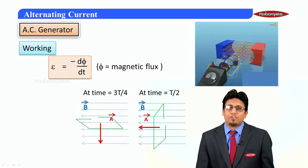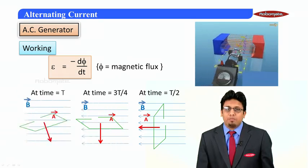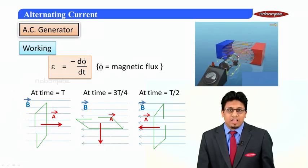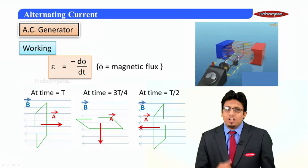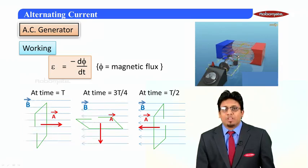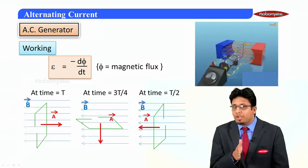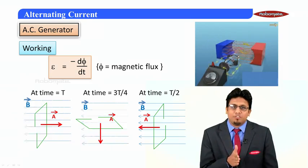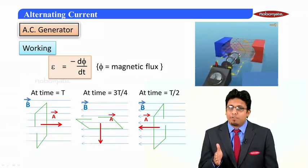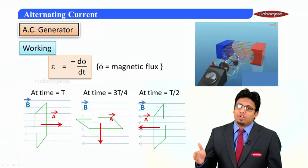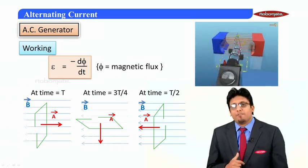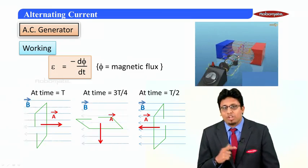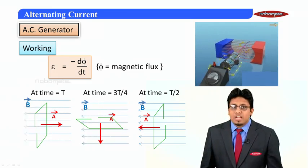On further rotation of 90 degrees, the time elapsed is T, and the area vector is again anti-parallel to the magnetic field. Thus, from t = T/2, the flux was positive. At t = 3T/4, it is zero, and at t = T, it becomes negative. So from t = T/2 to t = T, it is decreasing.